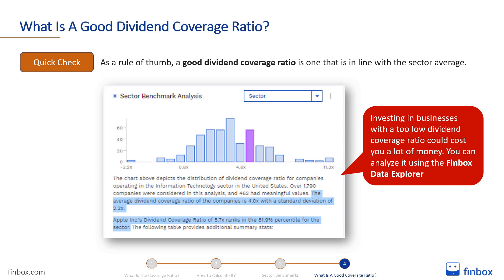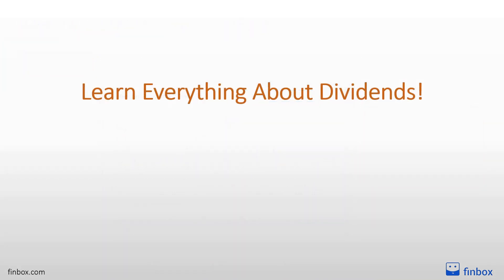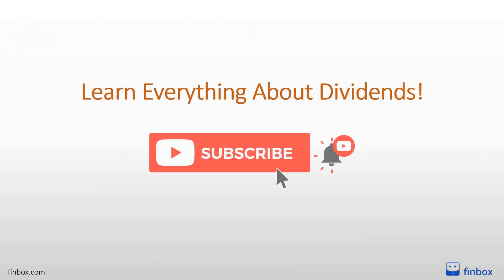Investing in businesses with a too-low dividend coverage ratio could cost you a lot of money. You can check if the dividend coverage ratio of your companies is sustainable in the long term by comparing it to the sector average using the Finbox Data Explorer. Don't forget to subscribe to the channel, because in the following days we'll publish new videos to help you learn everything about dividends for free. See you at the next lesson.